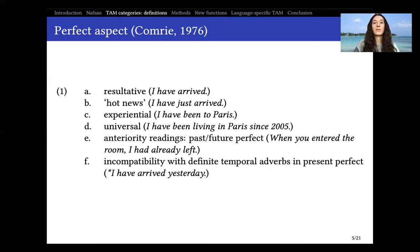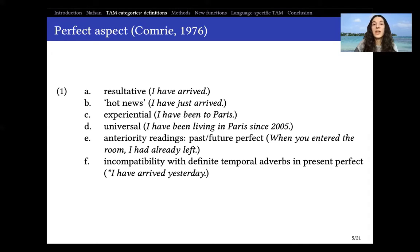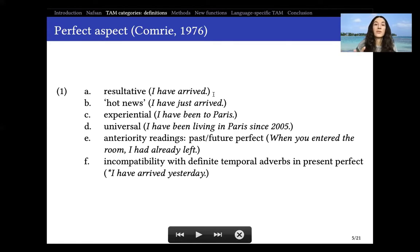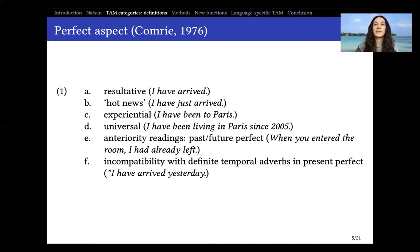Let us start with some definitions that will ease our way into the grammatical nature of testing for the category of perfect aspect. Perfect aspect is a category that has been seen mainly as an English category — English has been taken as a model to look for this category in other languages — primarily because it has some interesting features in English. The first function would be the resultative function: for instance, when we say 'I have arrived,' we're referring to the result state of my arrival — not exactly to the event of arrival, but to the time after.